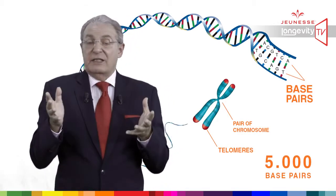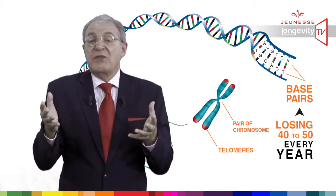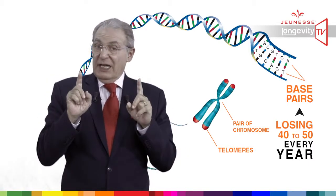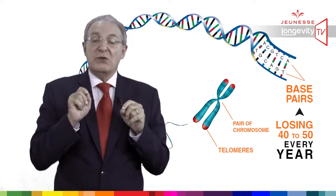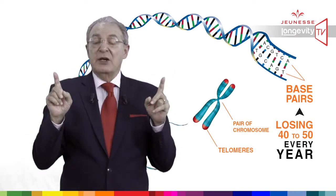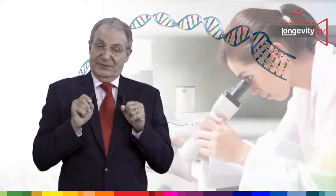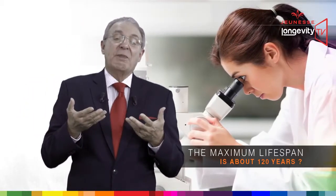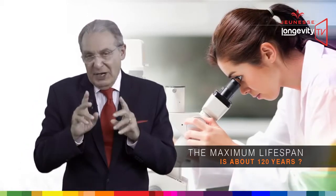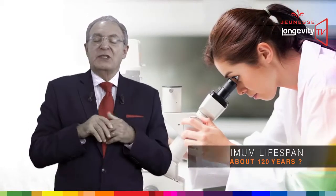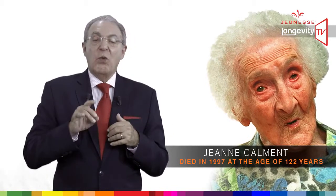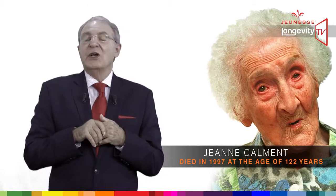In a sense, we start to die the minute we are conceived. When telomeres are reduced to 5,000 base pairs, our cells become senescent and die. We lose approximately 40 to 50 base pairs every year, so theoretically it should take 120 years to reach the 5,000 base pair limit. This is why some scientists believe the maximum lifespan is about 120 years. The world record of longevity still belongs to Jeanne Calment, a French lady who died in 1997 at the age of 122 years — what a coincidence.